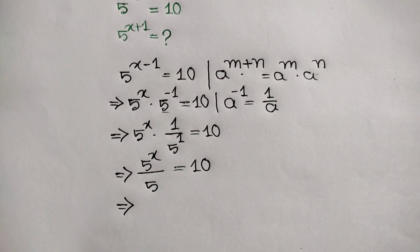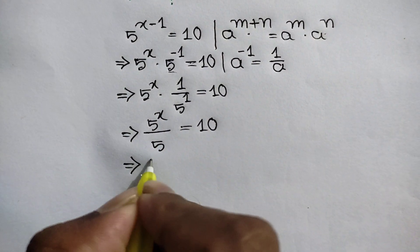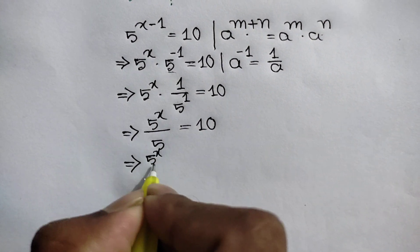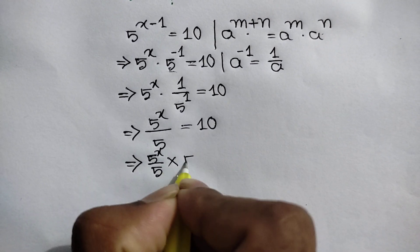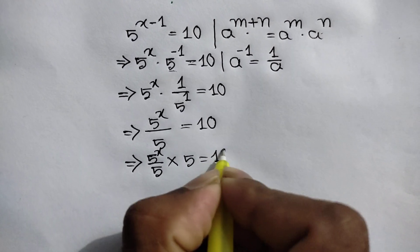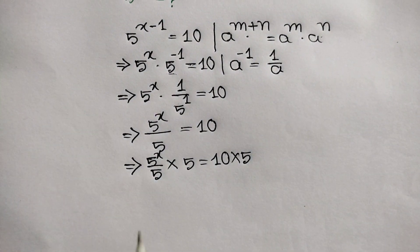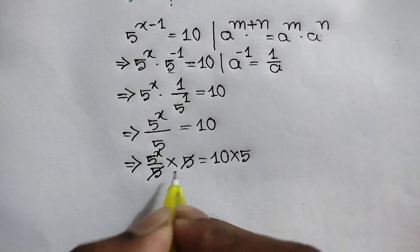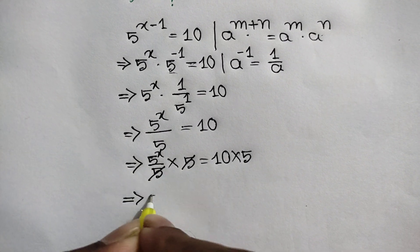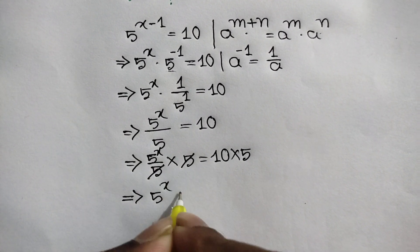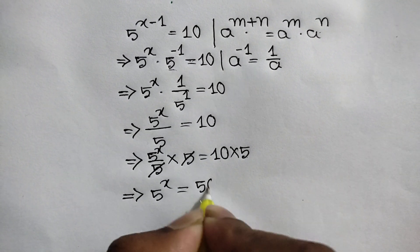Multiplying both sides by 5, we write 5 to the power x over 5 times 5 is equal to 10 times 5. The 5s cancel out, so 5 to the power x is equal to 50.